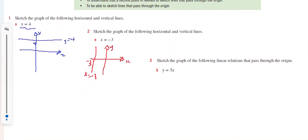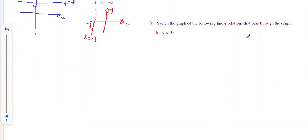And part 3, sketch the graph of the following that passes through the origin. So I know when x equals 0, y equals 0, so it goes through the point 0, 0. I need a second point. Since both x and y intercepts are the same point, I need to make up another point.